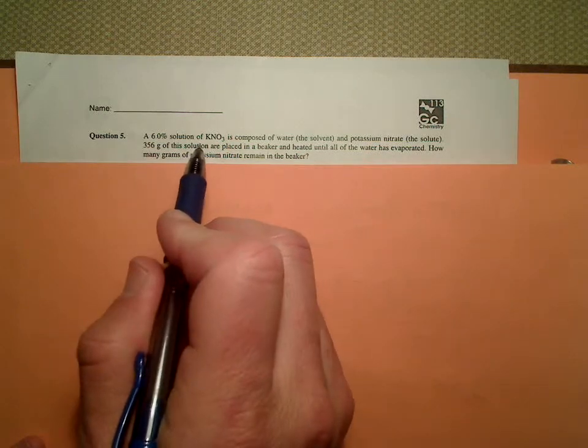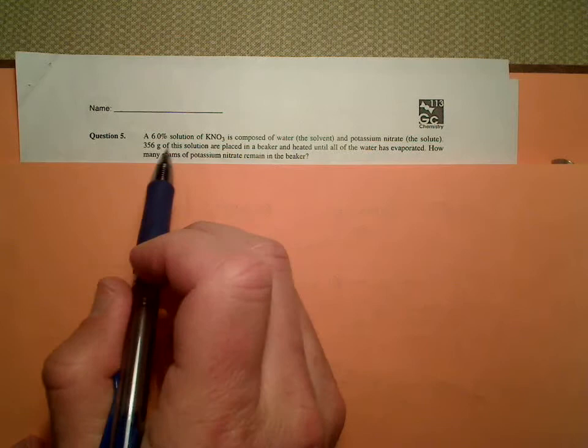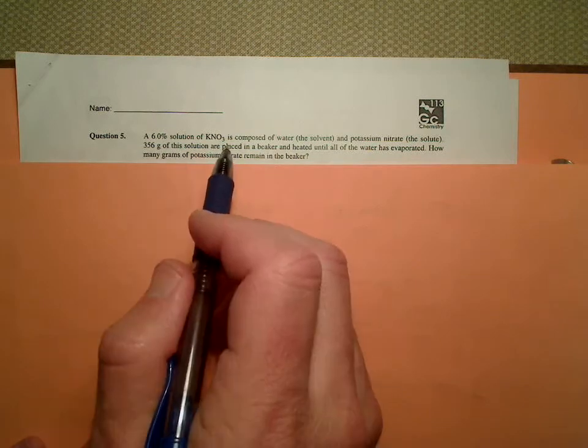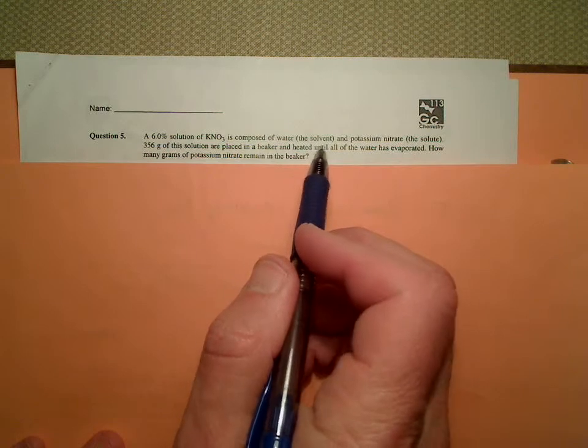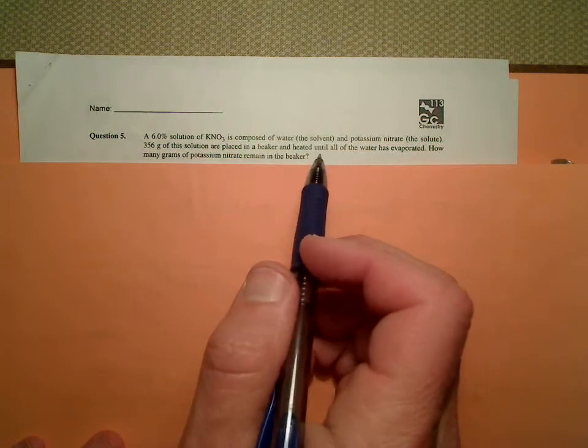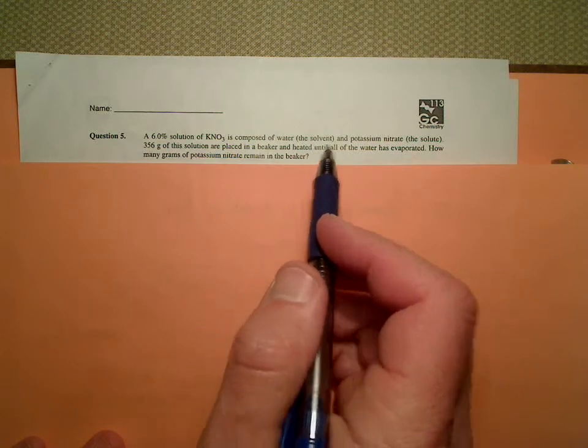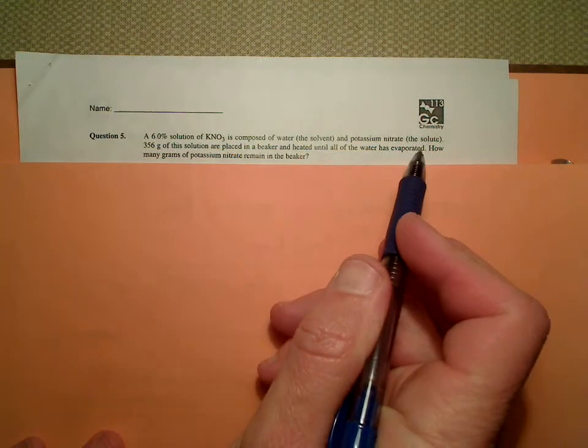So here we have a 6% solution. Remember, if it doesn't say anything, that means by mass. A potassium nitrate solution is composed of water, the solvent, and potassium nitrate, the solute. Remember, there are two parts to every solution: solvent and solute.